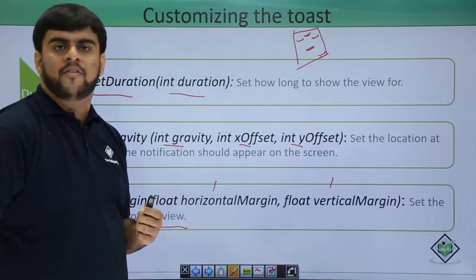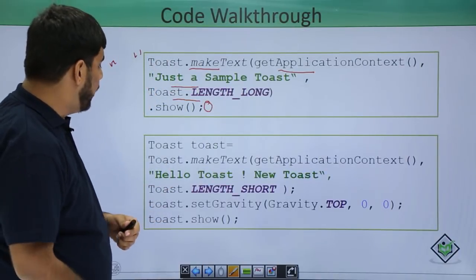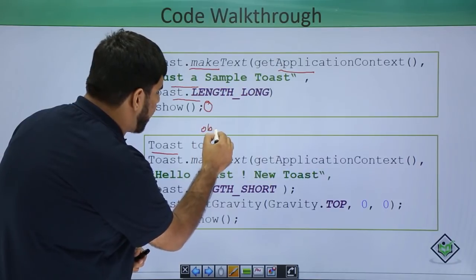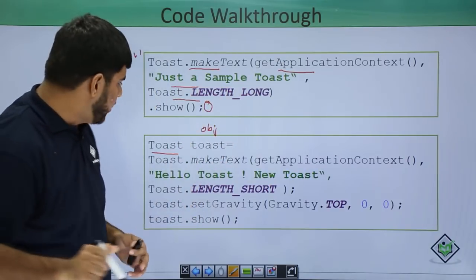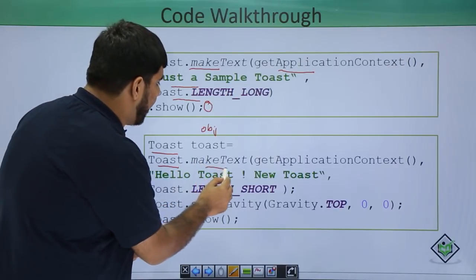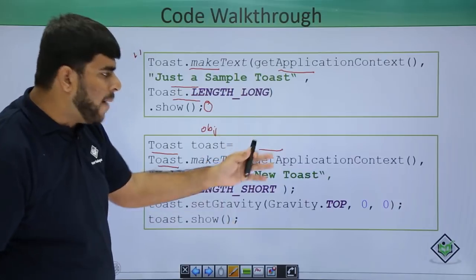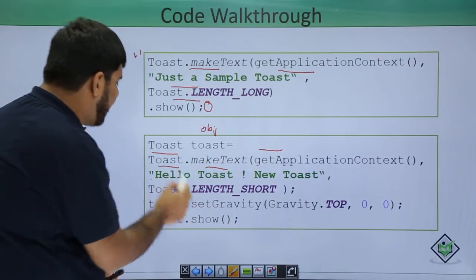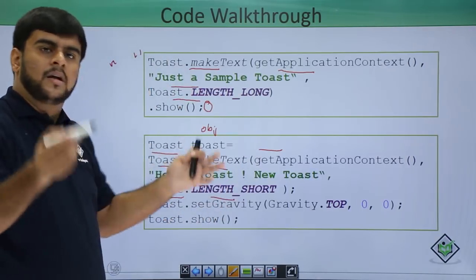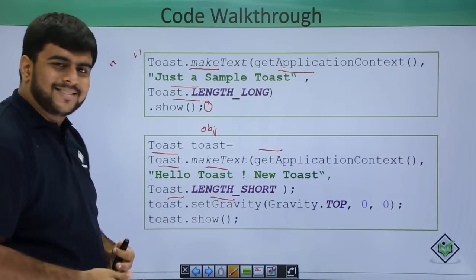Let's have an example wherein we are trying to customize the toast. This is my toast. Here, this is the toast class. I am making the object of this class. After making the object, I am using the toast class method make text to actually get the things in the right order. So, I am getting the context, I am getting the text of the toast and I am getting the length of the toast.